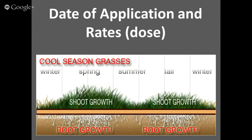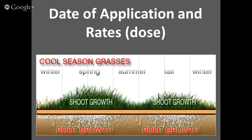We know that plants have evolved to take up nutrients through the roots, but there are certain times where it's just not going to be as efficient as a topical foliar application. Historically, looking at nitrogen recovery comparisons on different crops, you can see percent of nitrogen recovered as a soil application ranging from 10 to 40 percent. If you look at the foliar application, you can get upwards to 99 percent in some cases, such as tomato. Generally speaking, foliar applications are more efficient than soil-applied applications. If you wanted to correct a nutrient deficiency, you would likely apply the nutrient as a foliar.